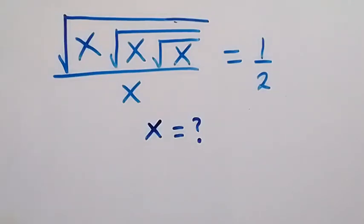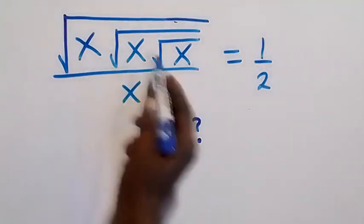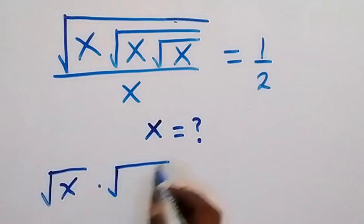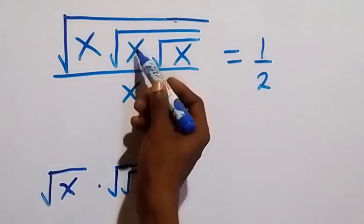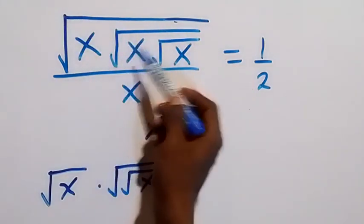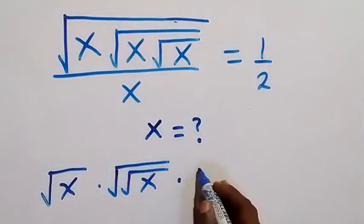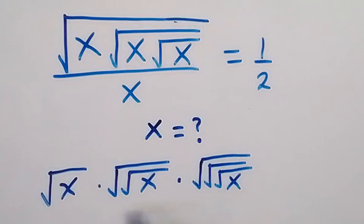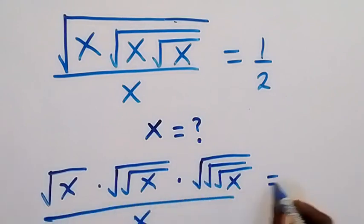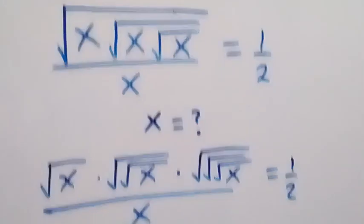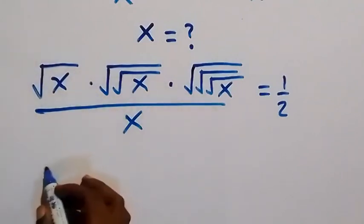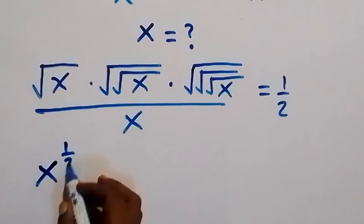Hello, you are welcome. How to solve this nice multi-step problem involving roots. Let's rewrite this as square root of x times square root of x. This other one will contain two roots — the one outside and the one here — also multiplied by the last one, giving us three roots. We have x divided by x which equals one over two. From the law of indices, this will be x raised to power one half, same thing as square root of x.